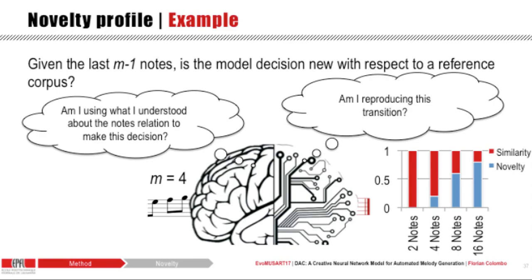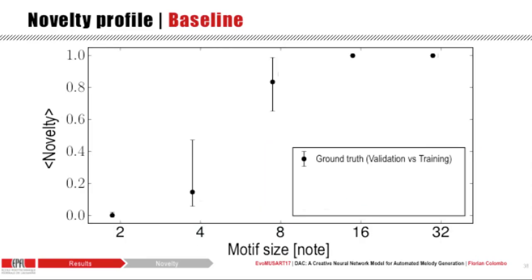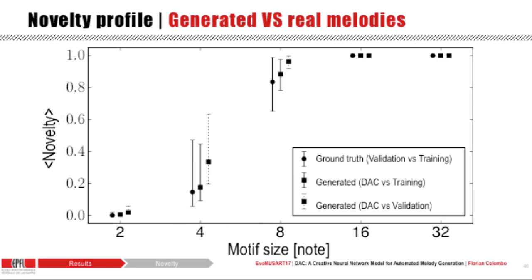The good thing about this measure is that we can take the validation corpus and compute how similar human-composed melodies are to each other, building a ground truth baseline that an ideal model of music composition should match. What you see here is the median, 5th and 95th percentiles of the average novelty for increasing motif sizes from left to right. We generated 400 melodies and computed the novelty profile with respect to both the training corpus and the validation corpus. Melodies generated by our model exhibit a very similar distribution to human-created melodies.